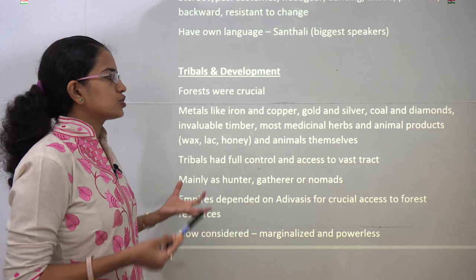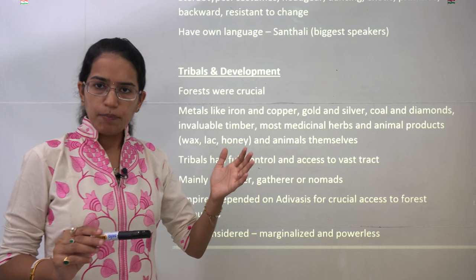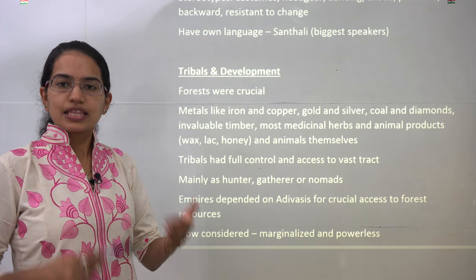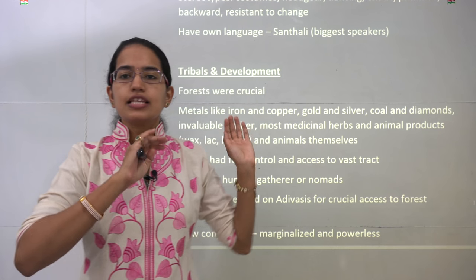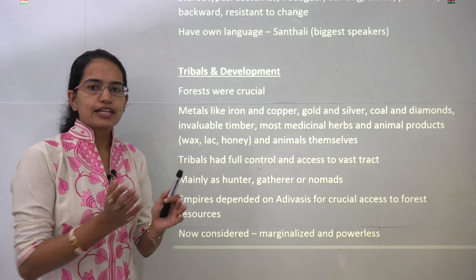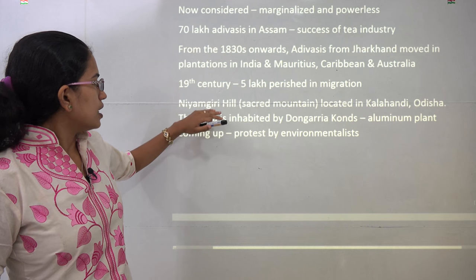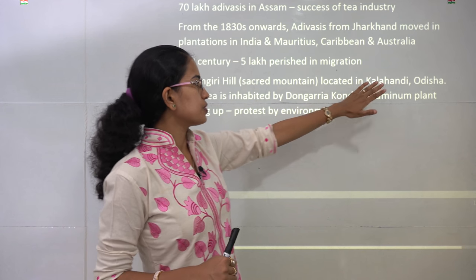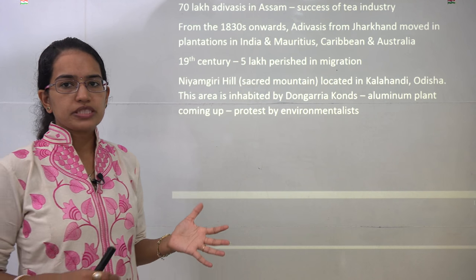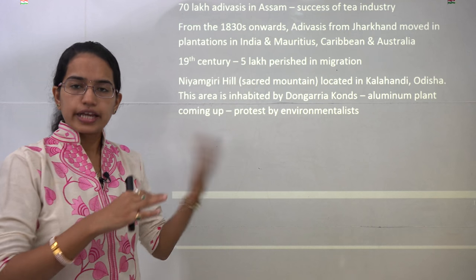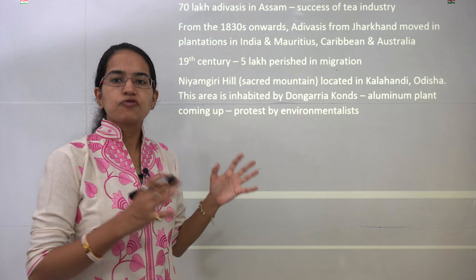Initially, tribals were familiar with major animal products and medicinal plants, and were really important in past society. But as trends changed, land became occupied for wildlife sanctuaries and national parks, and tribals were forced out of those areas, leading to further marginalization. For example, the Niamgiri hills in Kalahandi, Odisha, is inhabited by the Khond tribe. However, there was a proposition for an aluminium plant to be set up there — many environmentalists worked against it, but it moved forward, further marginalizing the tribes.